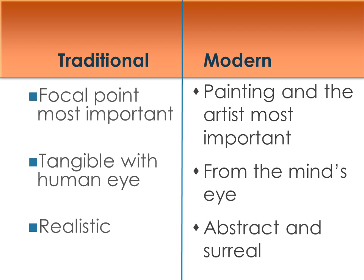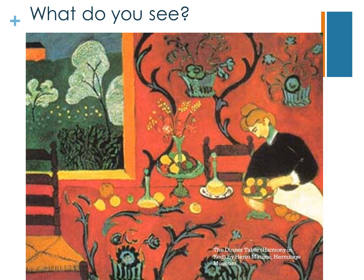Modern art, on the other hand, was more about the artist than the painting itself. It was from the mind's eye — often abstract, often surreal. The modern artist expressed what they felt inside rather than examining only what they could see. In the past, art determined a focal point, but modern art saw the canvas as a whole unit, making the viewer's eyes travel around the whole piece.